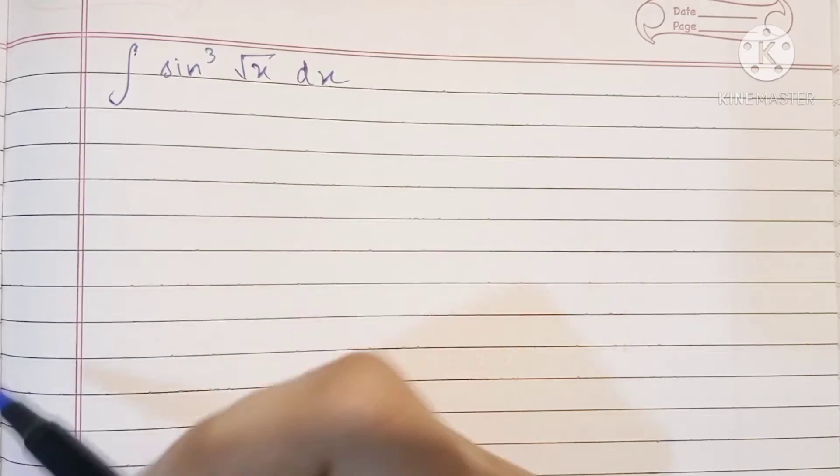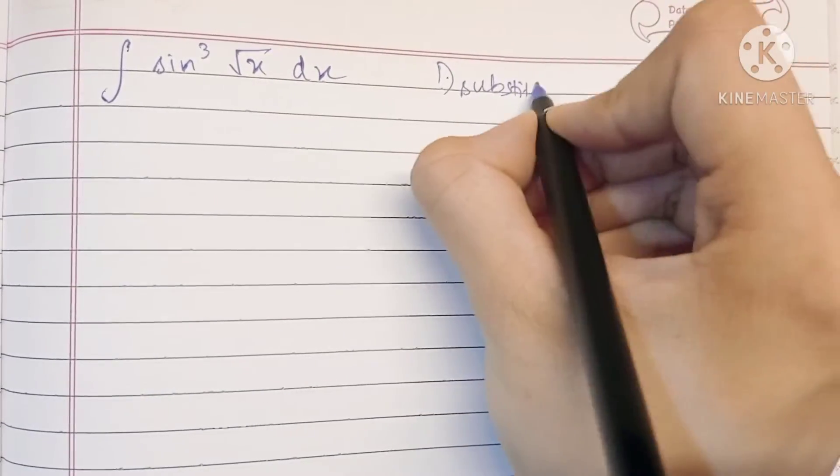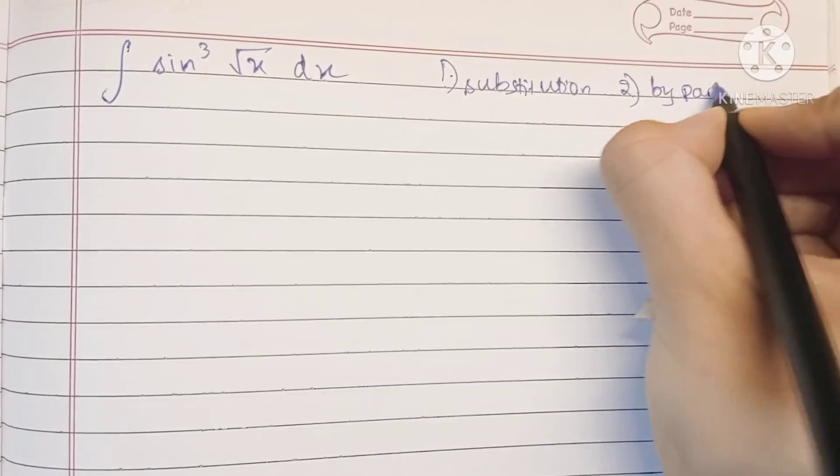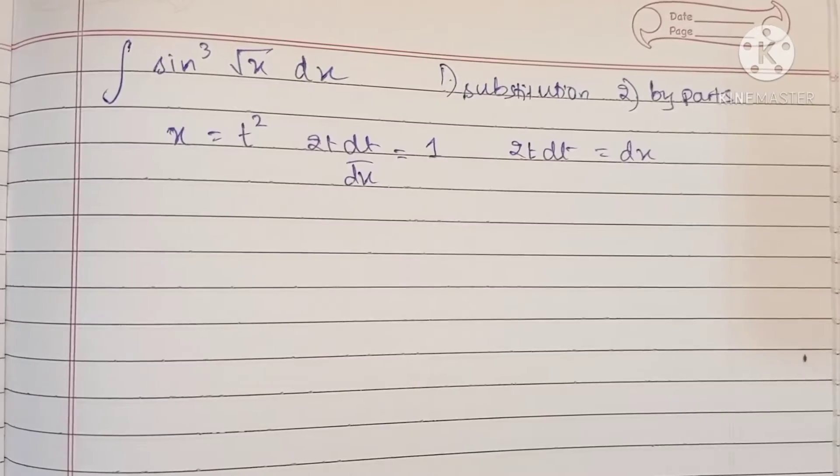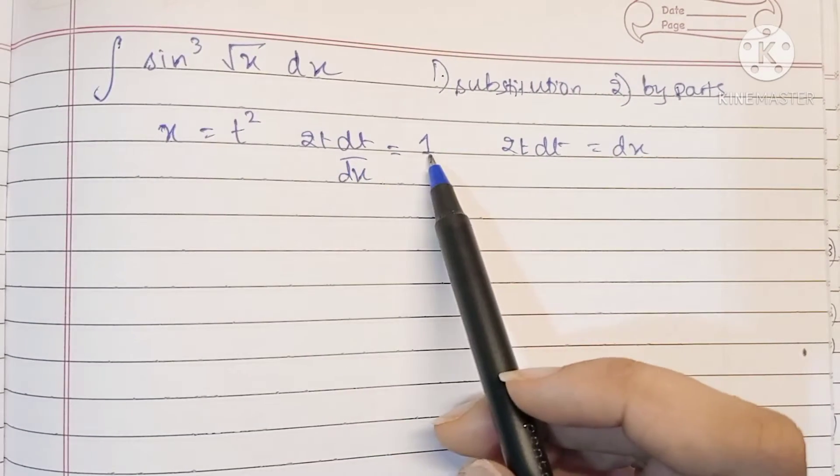First, we'll be using the substitution rule, and then second we'll be using the by parts rule. So let's begin. We are substituting x as t squared, so 2t dt by dx becomes 1, and 2t dt becomes dx.